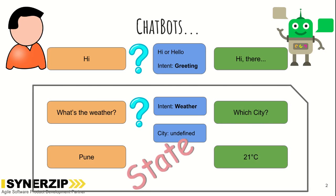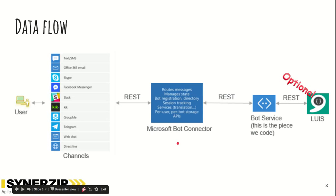These two interactions are a part of a single state. Now we will see the architecture. Microsoft Bot Connector is the core of the bot framework and it interacts with the channels and the bot service via REST APIs.